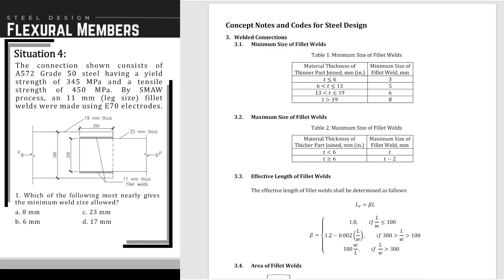This falls in the bracket for thickness greater than 13 but less than or equal to 19mm. Therefore, the minimum size of fillet weld is 6mm. The answer is letter B.